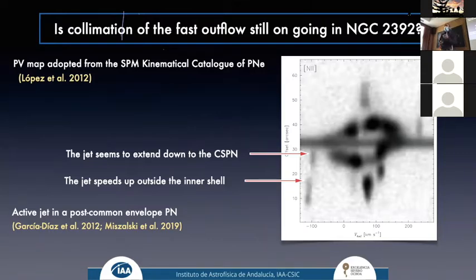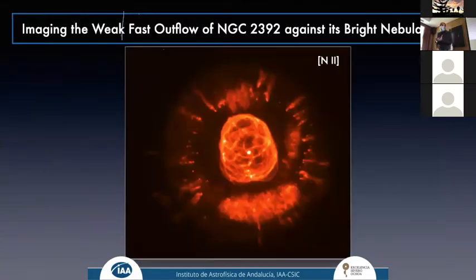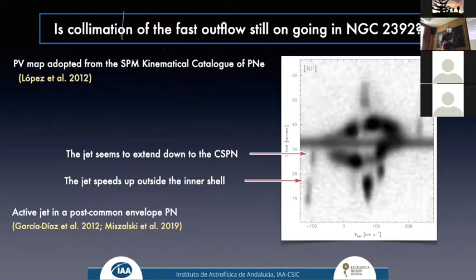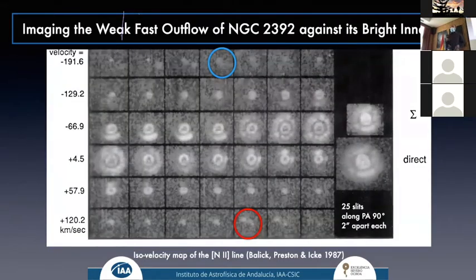If there is a star still accreting material, the jet could still be collimated. Looking at position-velocity maps, the jet actually goes all the way down to the continuum of the star, suggesting the jet is currently emanating from the central star — making it an active jet in a post-common envelope PN, possibly the only such case. However, when trying to see the jet in direct images, because the nebula shell is very bright, the jet is hidden, and structural components from the shell make it impossible to identify the jet's position.